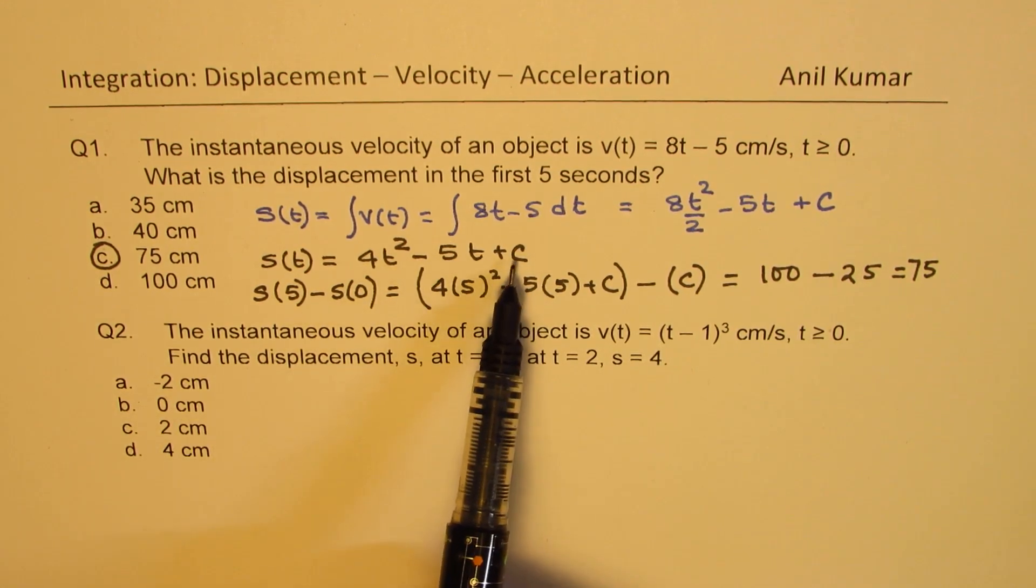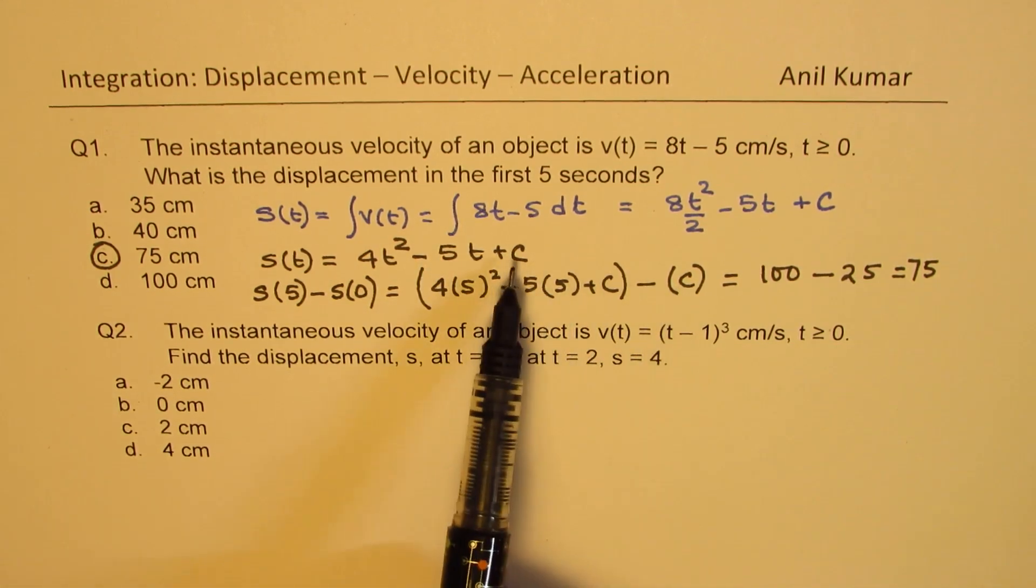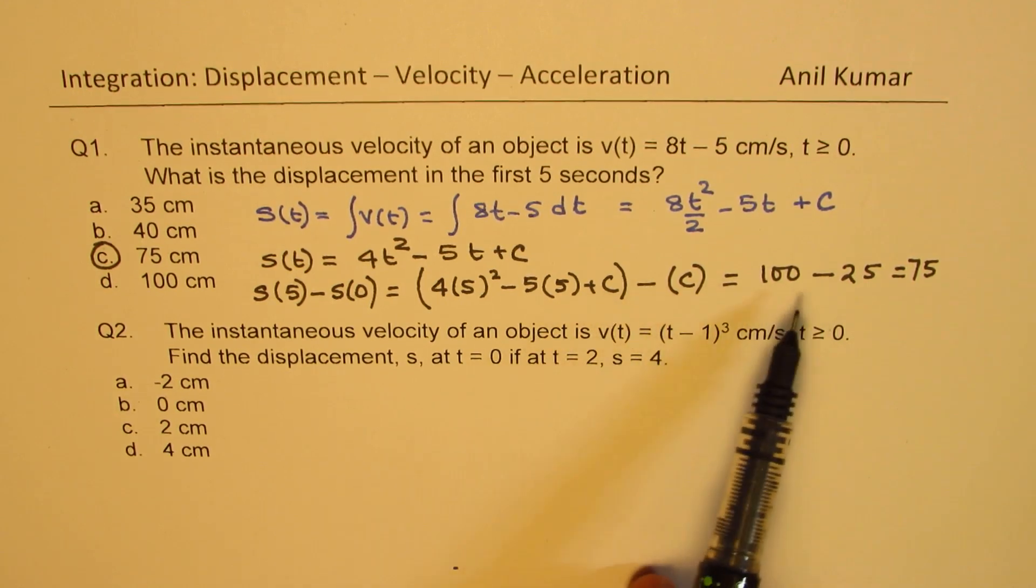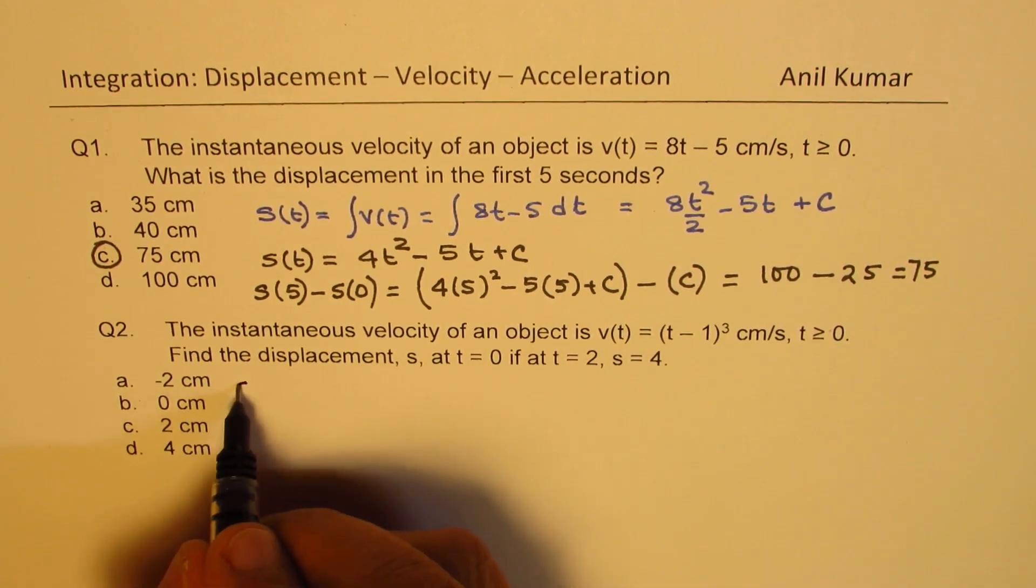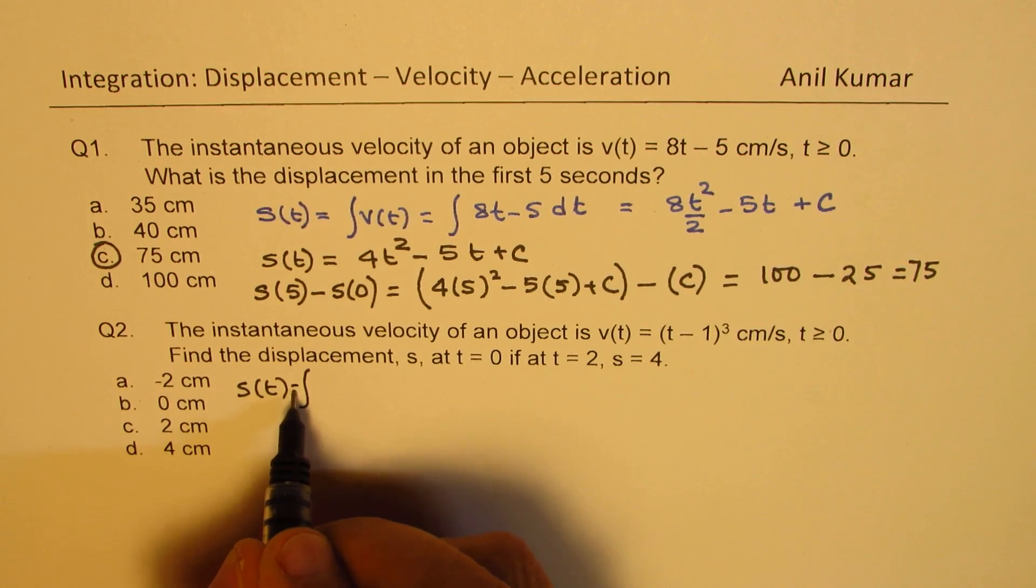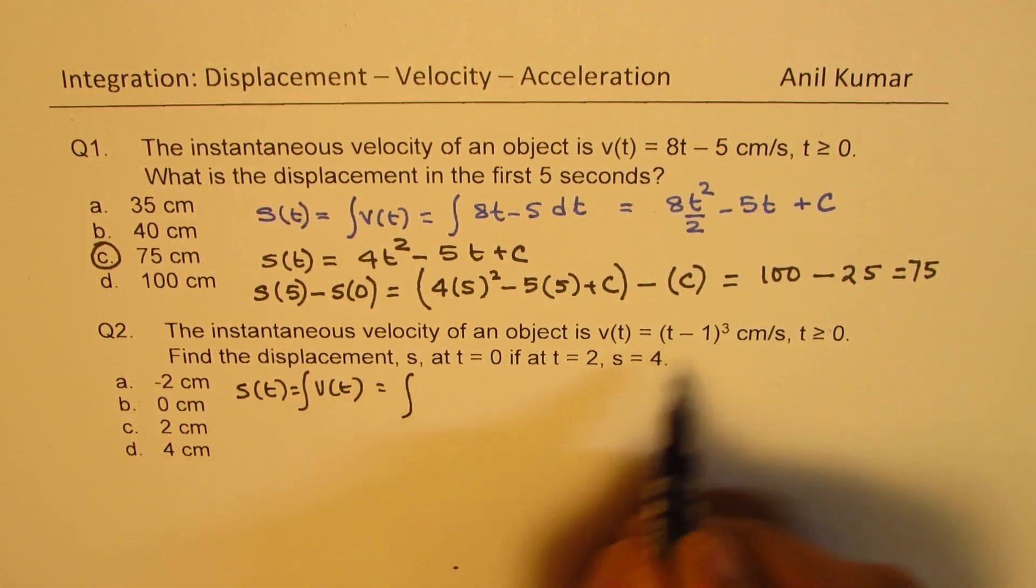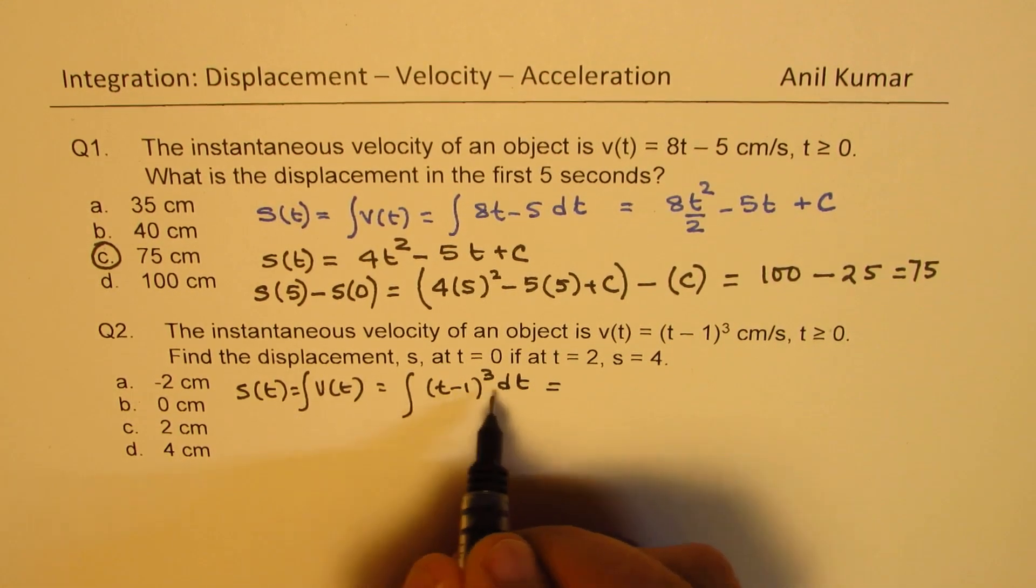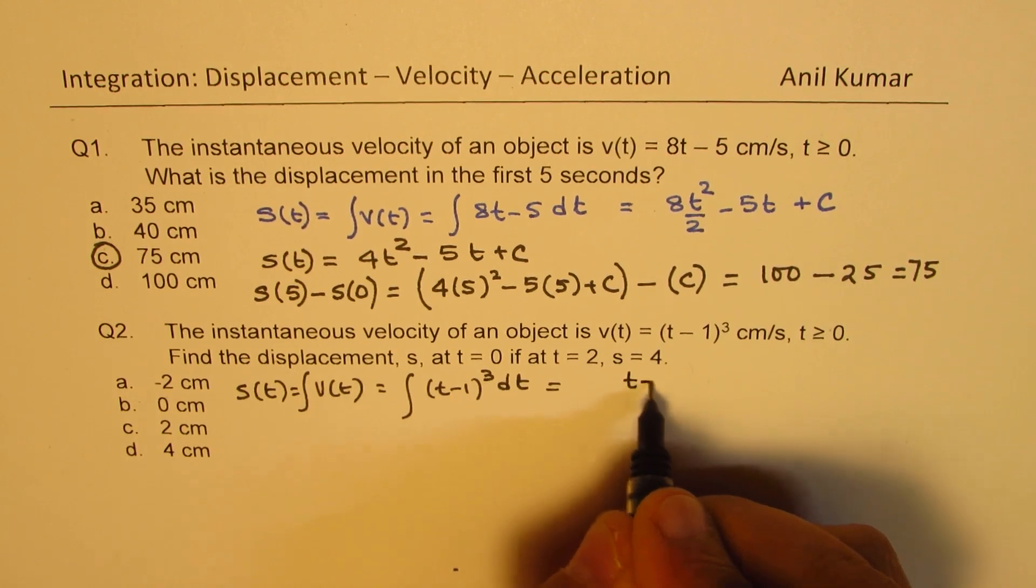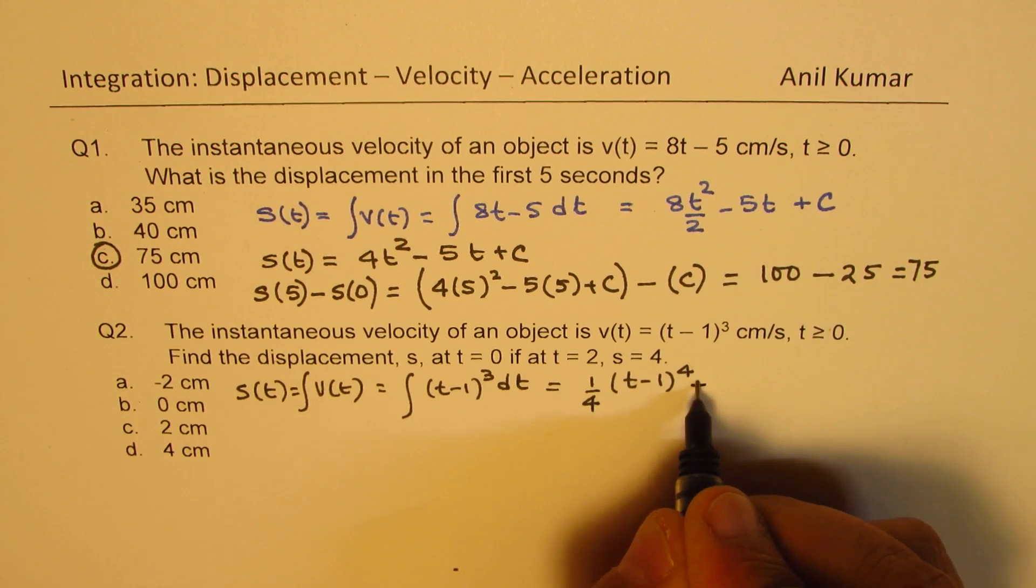In the previous case, you can realize that there was no need to find constant. We were trying to find difference and so it canceled. Okay, now so again, displacement is integral of the velocity. So which is integral of the function which is (t minus 1) whole cube dt. And applying the power rule, we get (t minus 1) to the power of 4 times 1 fourth plus a constant c.